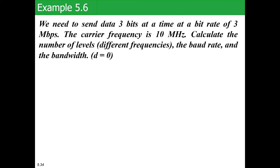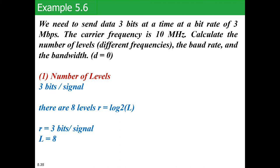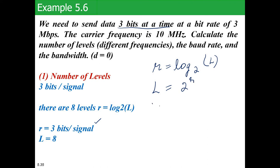Now let us give another example for better understanding. We need to send data three bits at a time at a bit rate of 3 Mbps. The carrier frequency is 10 megahertz. Calculate the number of levels (different frequencies), the baud rate, and the bandwidth. First, let us find the number of levels. Since we send data three bits at a time, r equals 3 bits per signal. Using l equals 2 to the power r: l equals 2³ equals 8.